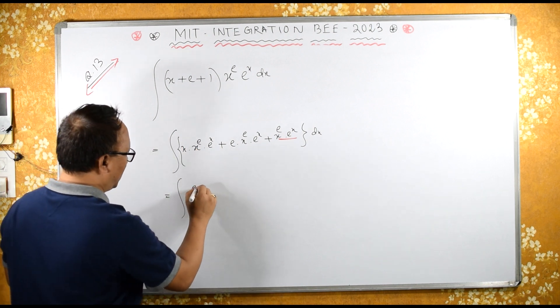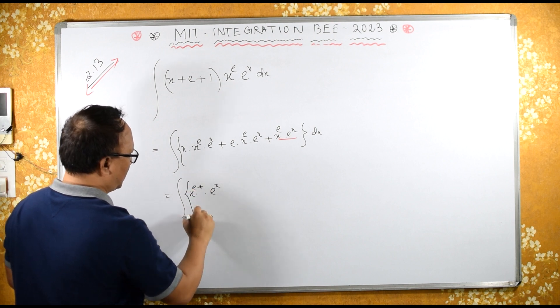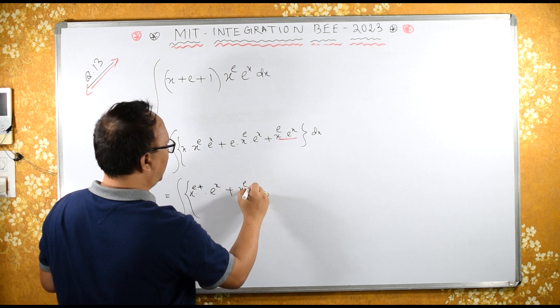If I take x raise to e, e raise to x common, then what I have is e plus 1 into e raise to x plus...